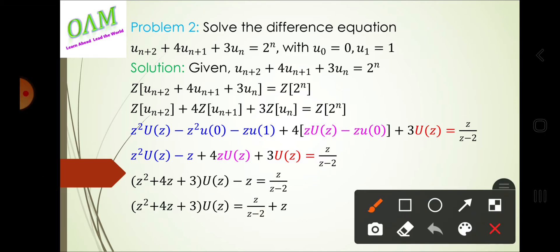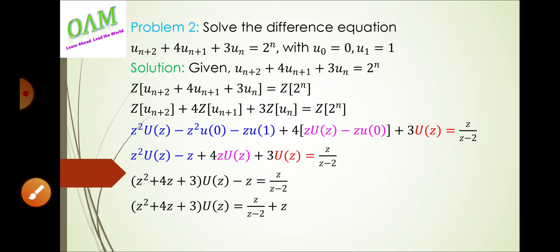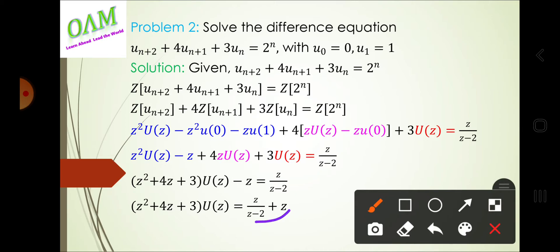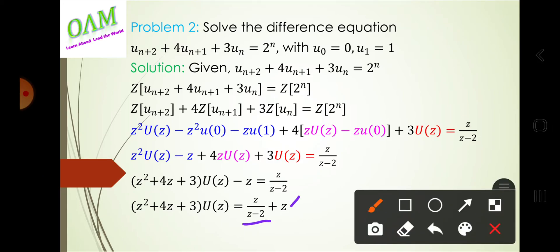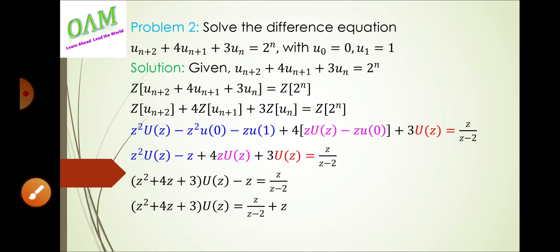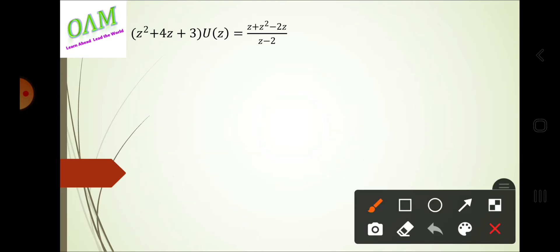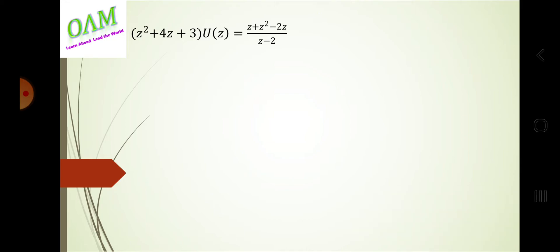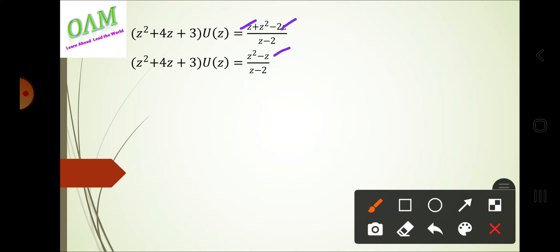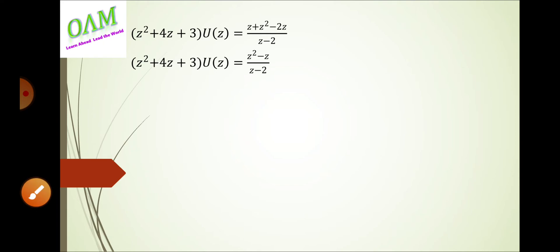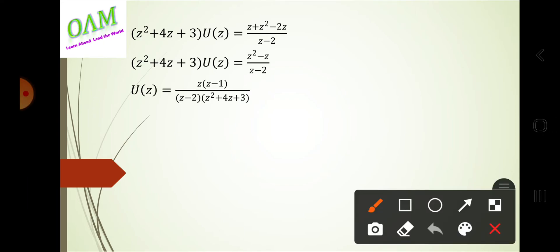Moving minus z to the right-hand side and performing cross multiplication, the numerator becomes z² − 2z. So U(z)·(z² + 4z + 3) = (z² − 2z)/(z−2). The numerator simplifies to z² − 2z, and the denominator factor is z² + 4z + 3.